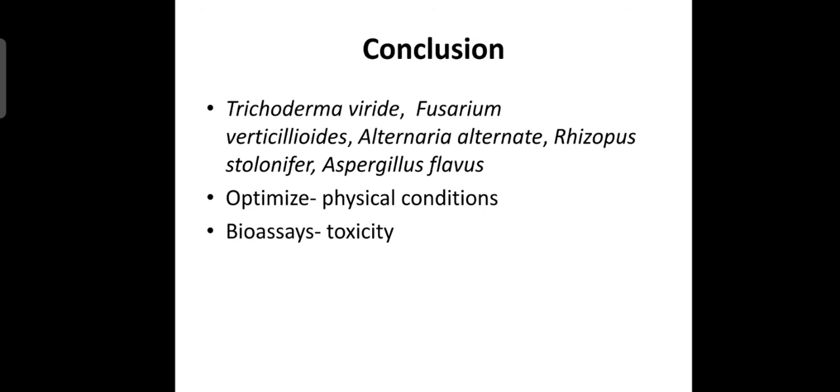This brown color was characterized by measuring the OD using spectrophotometer. With this, to come into the conclusion, we were able to identify few fungal species like Trichoderma viridae, Fusarium verticillitis, Alternaria alternata, Rhizopus stolonifer, Aspergillus flavus. Here it is just preliminary results what we got. There is a lot more left to optimize the physical conditions.